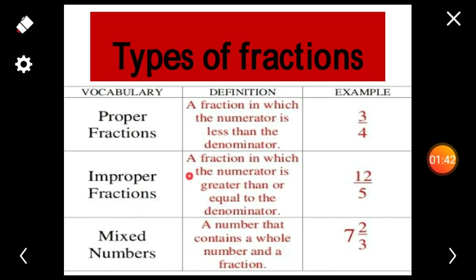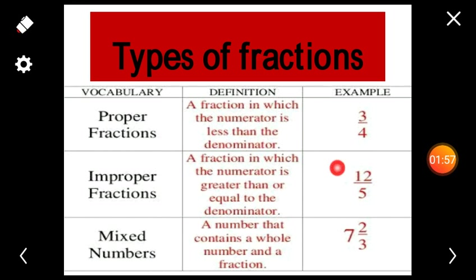Improper fraction. A fraction in which the numerator is greater than or equal to the denominator is called an improper fraction. Example: 12 by 5. Here, numerator is 12 and denominator is 5. That is, 12 is greater than 5 — the numerator is greater than the denominator. Such a type of fraction is called an improper fraction.